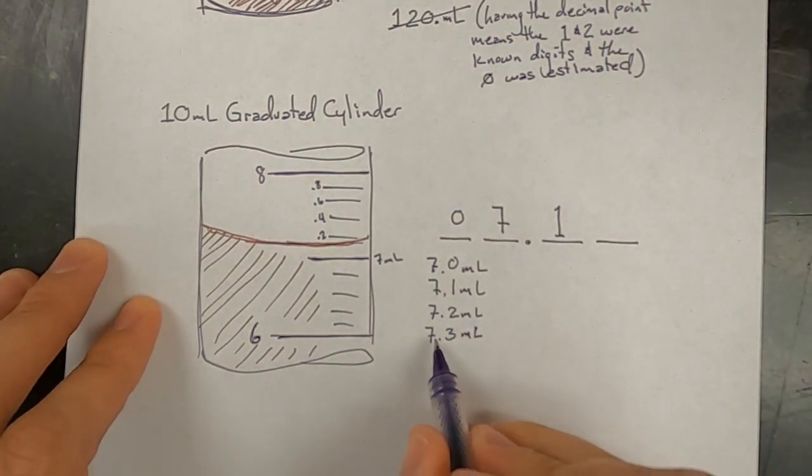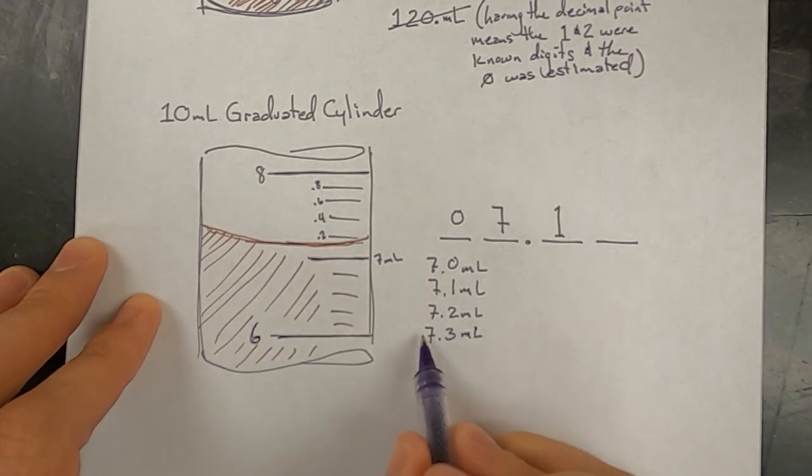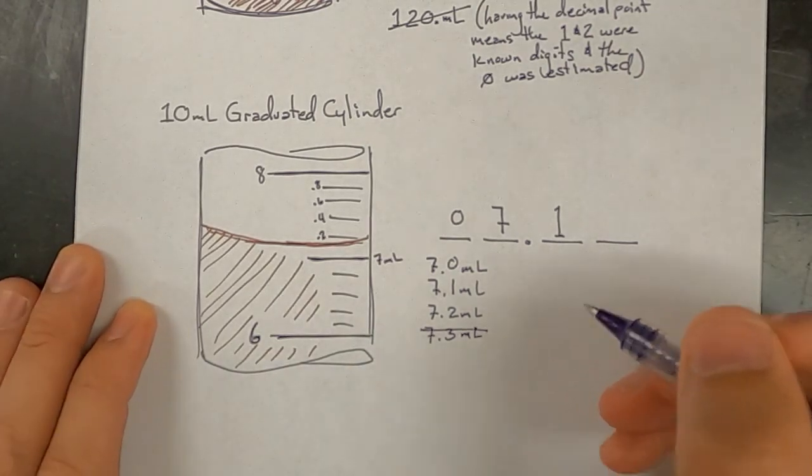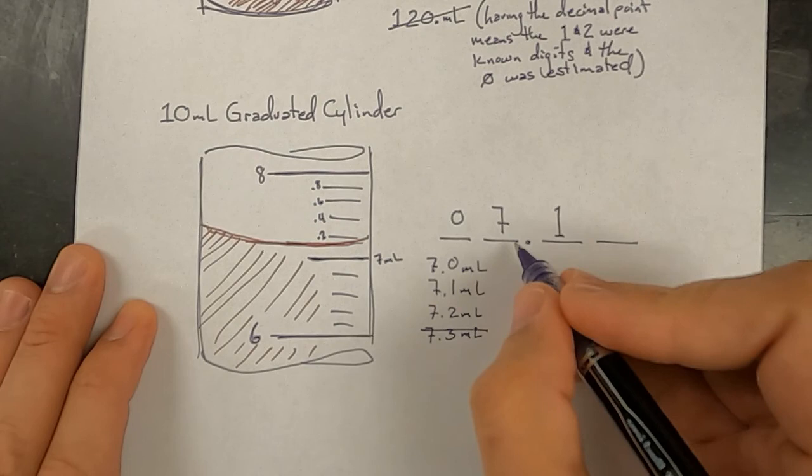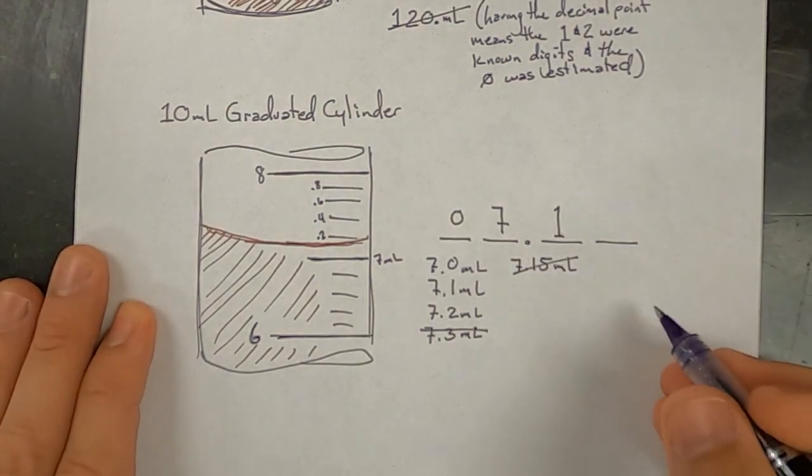One that would not be valid would be 7.3 because it is definitely not over the 0.2 mark. Another one that would not be valid would be if somebody wanted to go with too much detail, because again, it gives too much detail.